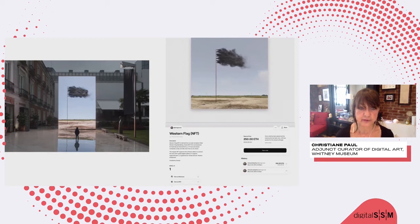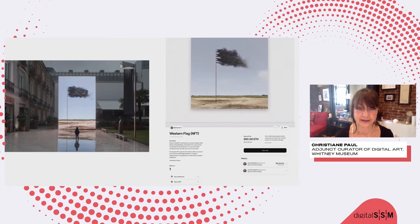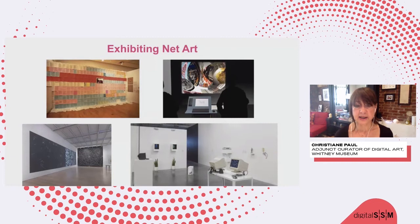Yet one other example where I see potential is artists creating spin-offs of larger works through tokenized work. This is Western Flag, which is part of a token related to John Gerrard's much larger video installation. So I also want to briefly go through models of exhibiting net art. Once again, I could talk for hours about this, so this will be just a very sketchy survey.